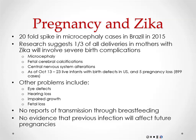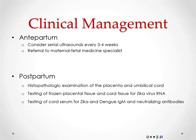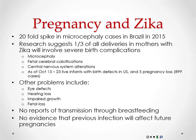Does Zika clear from the body? They've shown it clears from bodily fluids. Blood clearance is about two weeks. The longest they've detected it is in semen — up to six months — which is why six months of no unprotected sex is recommended for men. In women, vaginal secretions have shown Zika up to eight weeks. Whether it goes into hiding somewhere like EBV or CMV, we don't know yet. It's still new.